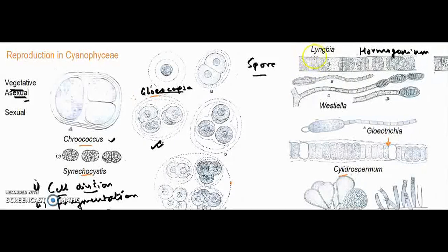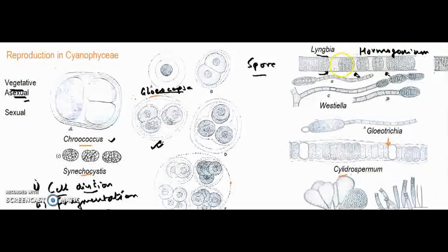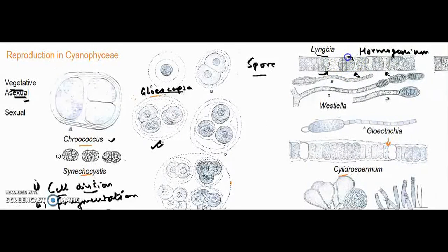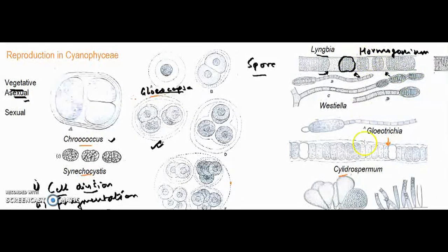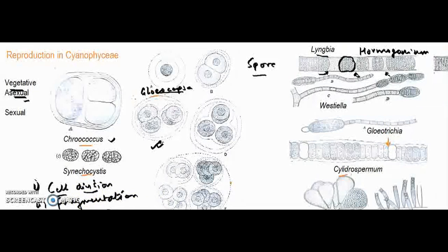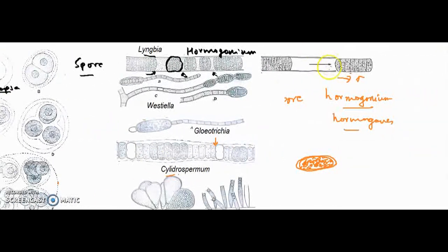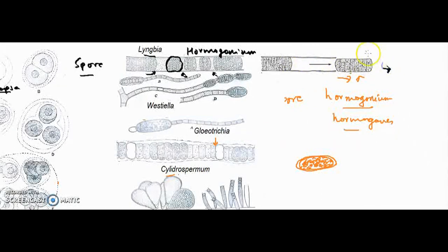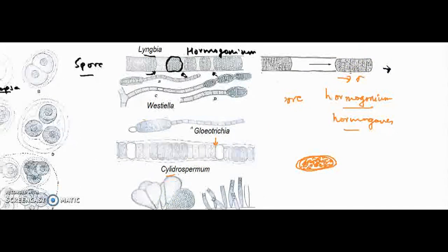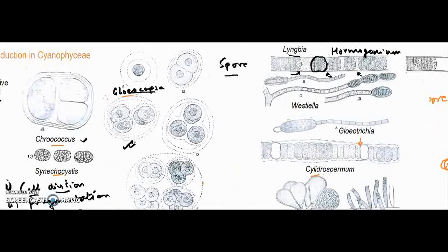In members like Lyngbya and Oscillatoria, there are separation discs, biconcave gelatinous discs present in the filament or trichome at different places. The cells in between may get separated, act as a unit, and come out of the sheath, germinating into a new filament. They may slide inside the sheath and come out forming a new filament. This is the mode of reproduction by hormogonia.